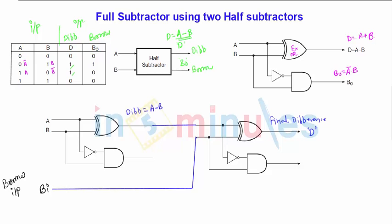Then the borrow is generated from two of the cases. Borrow can be generated from the first half subtractor also, or it can be generated from the second also. So final borrow is nothing but the OR operation between these two. So this is going to be the final borrow BO. And this is nothing but the OR operation between borrow from the second stage or it may be borrow from the first stage.